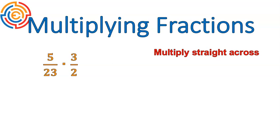In this case, I have 5 over 23 times 3 over 2. I'm going to multiply the top times the top, and the bottom times the bottom. That's how you multiply fractions. 5 times 3 is 15. 23 times 2 is 46. There we go. I've now multiplied the fractions.